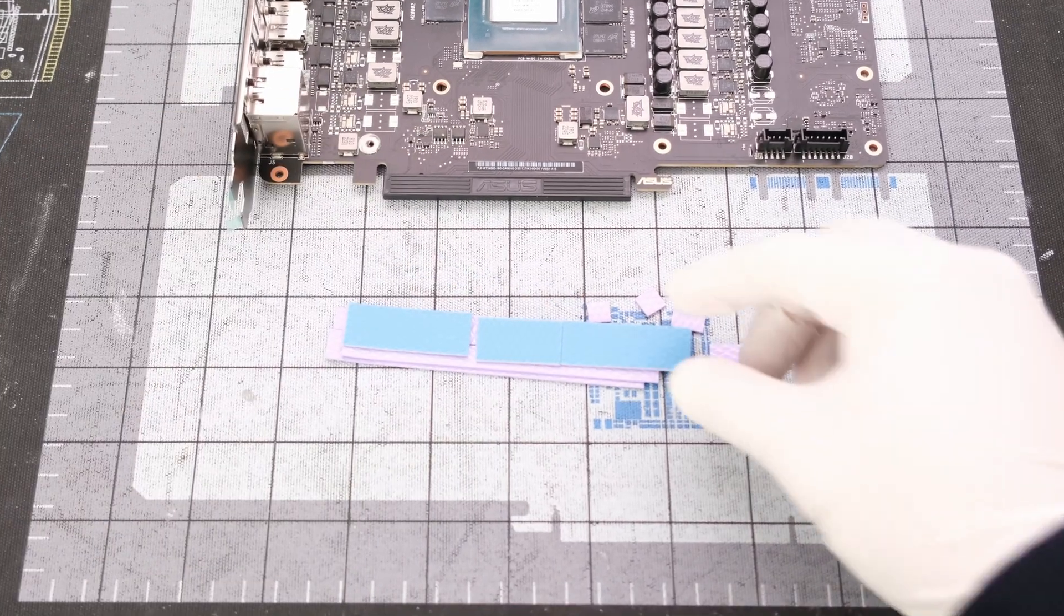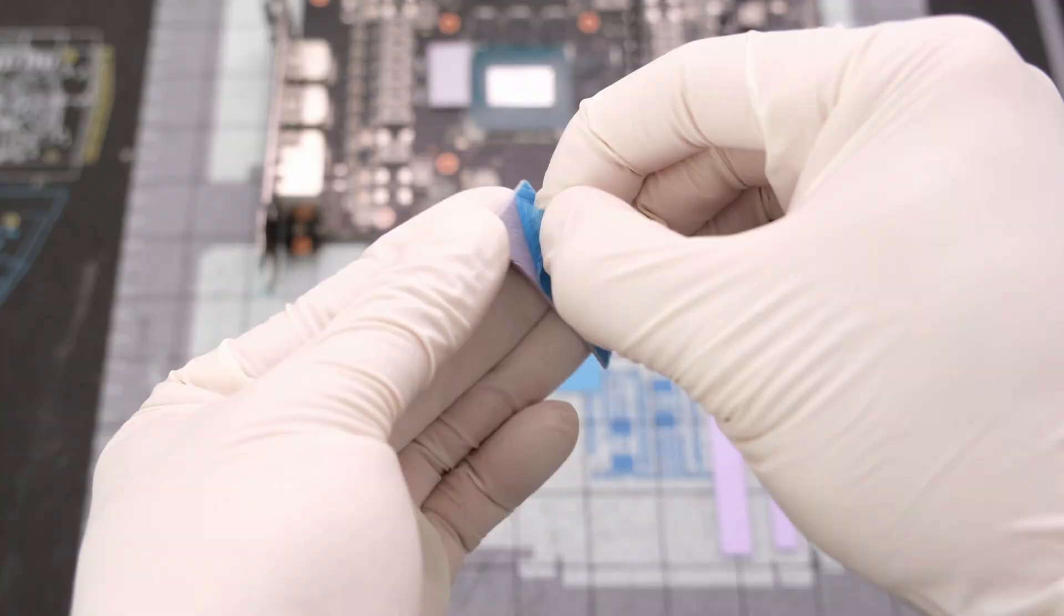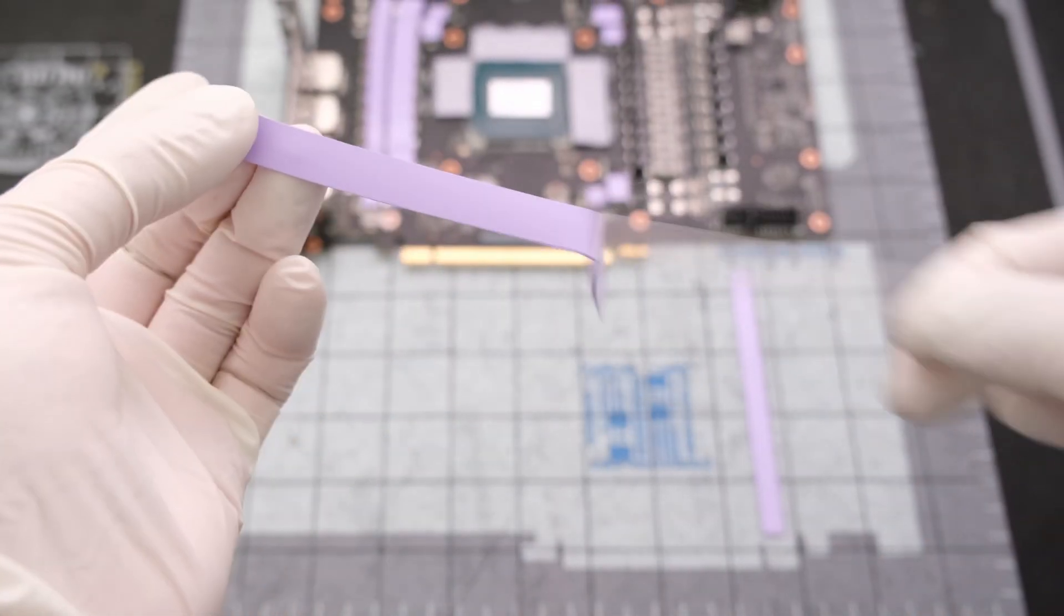There's plastic film on both sides to remove before placing the thermal pad onto the PCB.